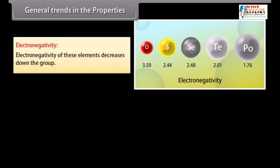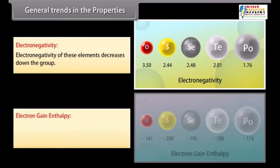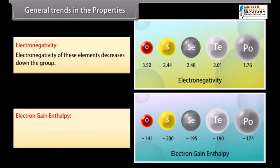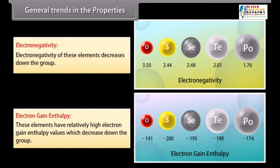Elements of group 16 are characterized by high electronegativity. Oxygen is the second most electronegative element after fluorine. Electronegativity of these elements have relatively high electronegativity values, which decrease down the group.